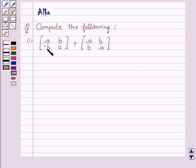Our first matrix is A, B, minus B, A and our second matrix is A, B, B, A.